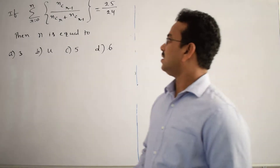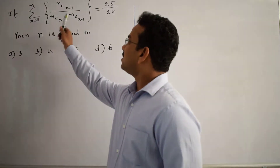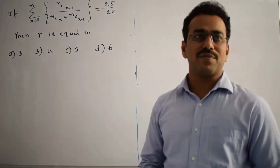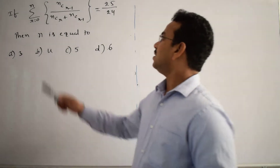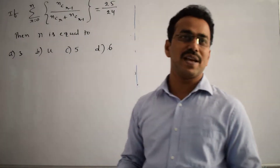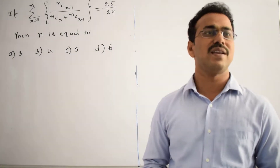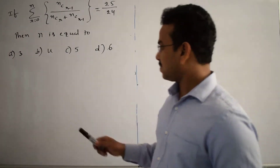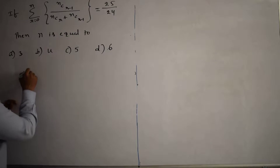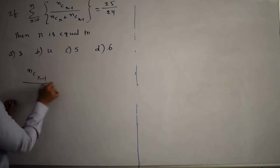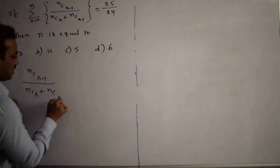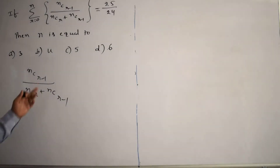Clearly, they have given a summation of some fraction cubed equals 25 by 24. First, we have to simplify the fraction, which has a numerator as a binomial coefficient and a denominator as a sum of binomial coefficients. The given fraction is NCR-1 divided by (NCR + NCR-1).